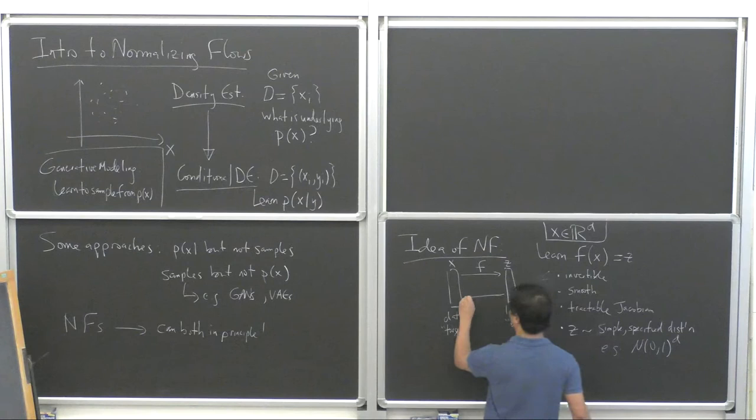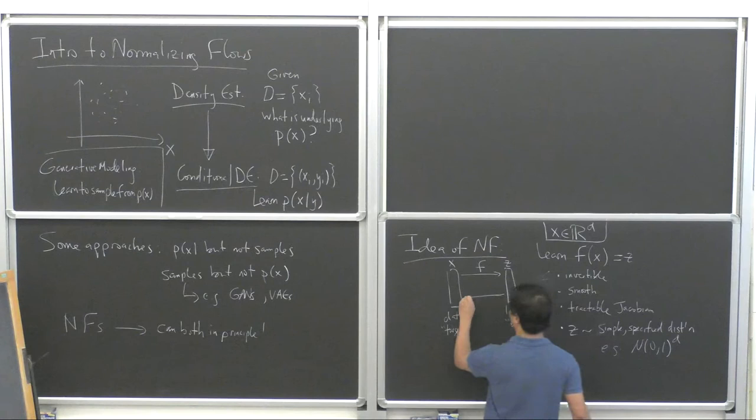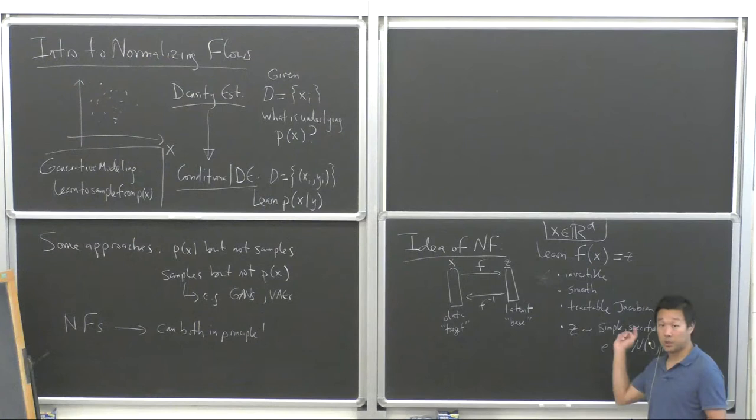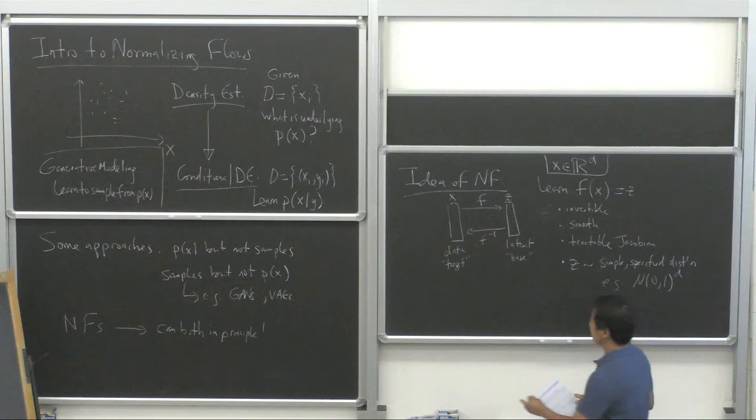Since F is invertible and bijective, F inverse exists and we can also go in the other direction. So now let me explain how normalizing flows can do both density estimation and sampling. All we have to do for density estimation is use the change of variables formula.